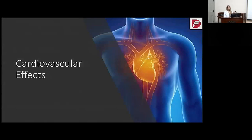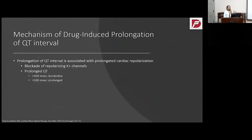Moving on to cardiovascular effects. We're going to talk about QT prolongation and arrhythmias, mainly focusing on QT prolongation. Potassium channels are really important for the electrical activity of the heart. Agents that prolong the QT interval will block specific potassium channels, disrupting electrical activity and increasing QT prolongation. This can lead to torsades de pointes and sudden cardiac death. What's considered prolonged: 450 milliseconds is borderline, and over 500 milliseconds is considered extremely prolonged.